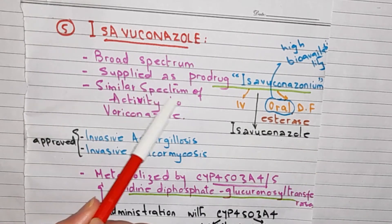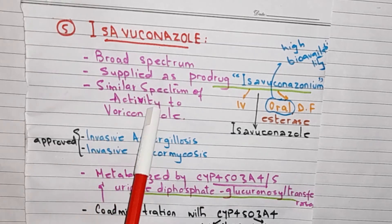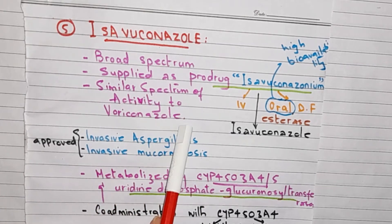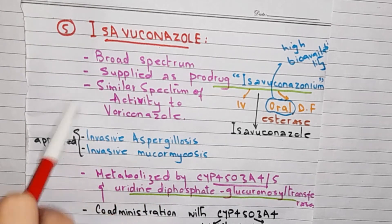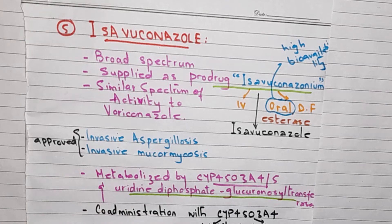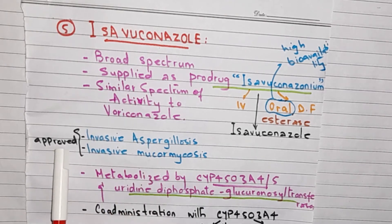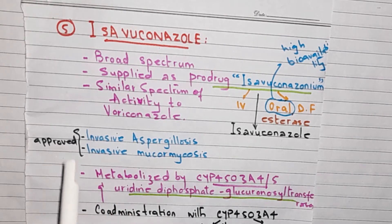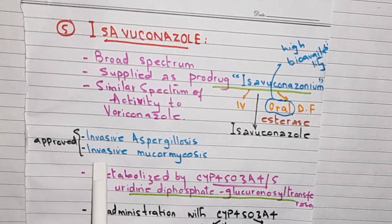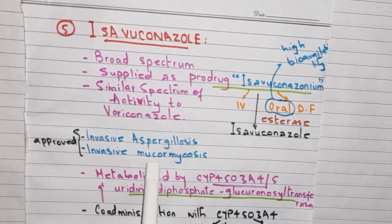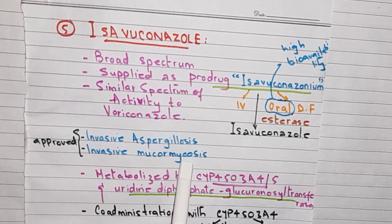The spectrum of activity of Isavuconazole is very similar to Voriconazole. It is approved for the treatment of invasive aspergillosis and invasive mucormycosis.